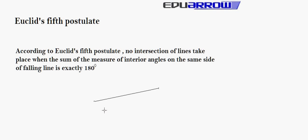Take a line AB and take another line CD. Now, take a falling line intersecting both these lines.